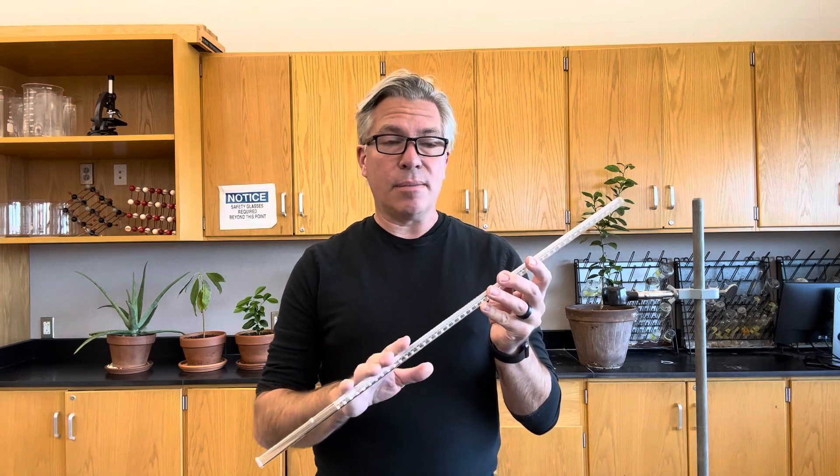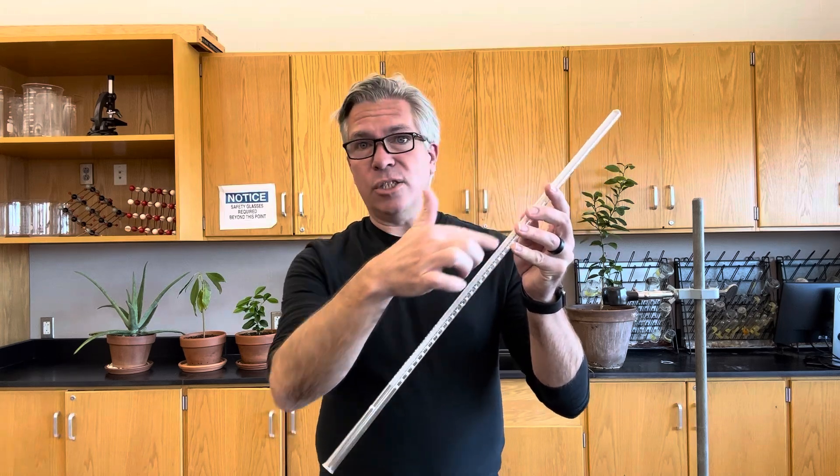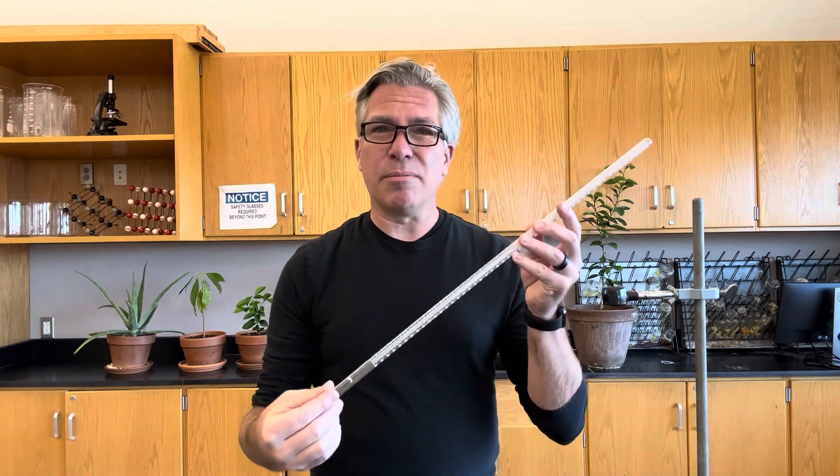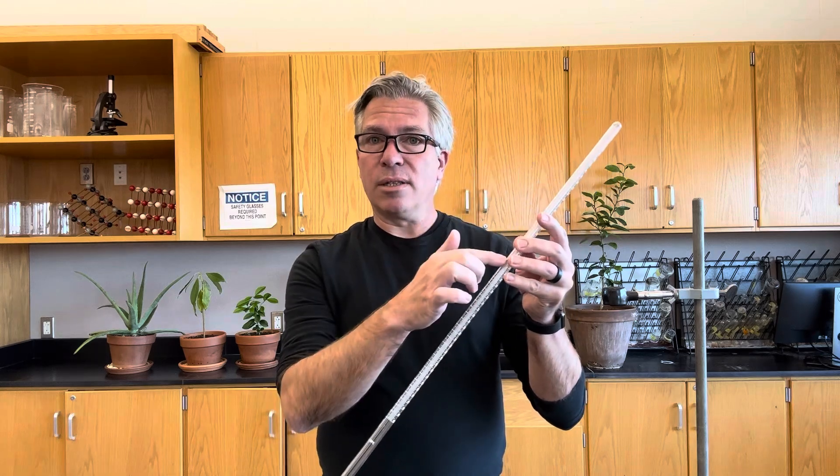This is called a eudiometer, and it's basically a long glass tube closed at one end with graduations on the side. It kind of looks like a burette, except there's no nozzle on the end of it. It's just a container for capturing gases and then measuring their volumes.